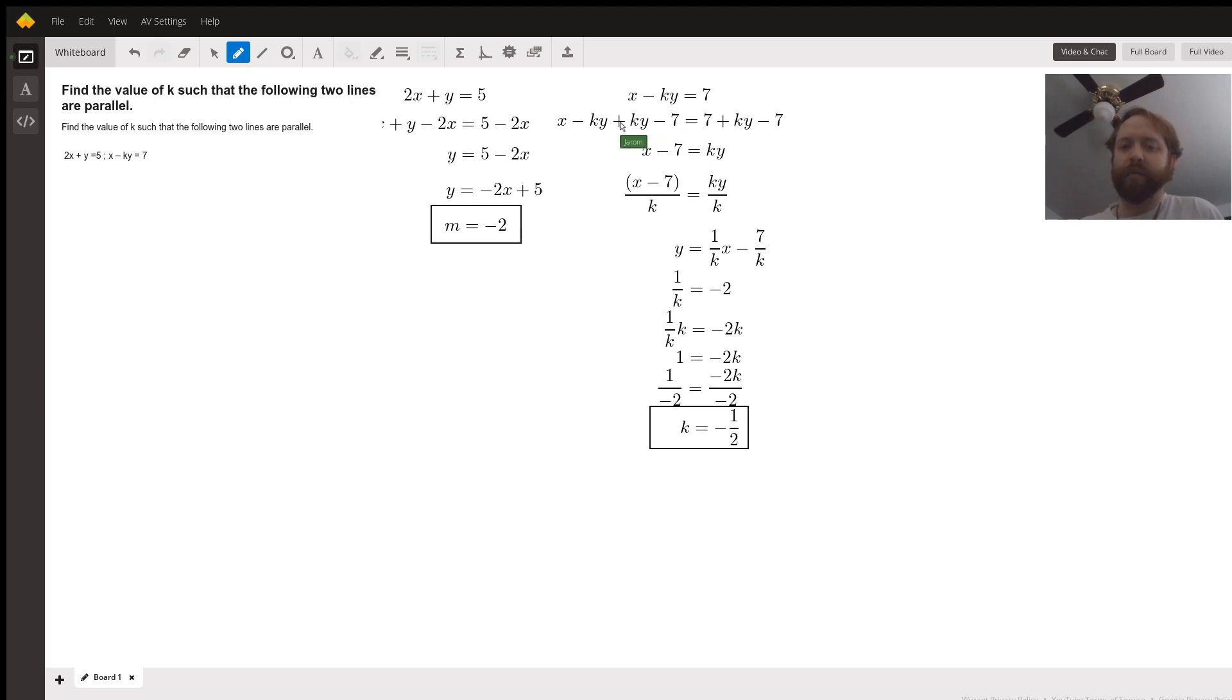The minus ky plus ky on the left will cancel. The 7 minus 7 on the right will cancel, giving us x minus 7 equals ky. Dividing both sides by k gives us y equals 1 over k times x minus 7 over k.